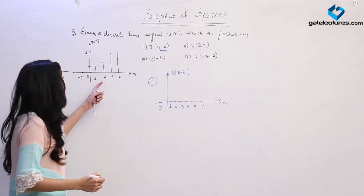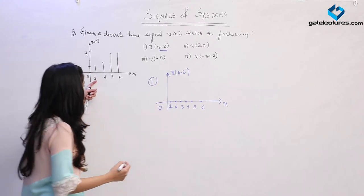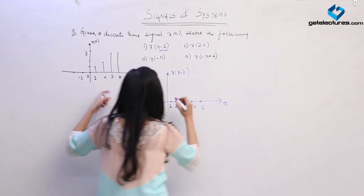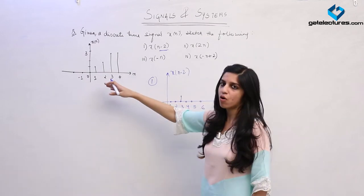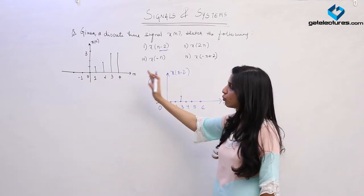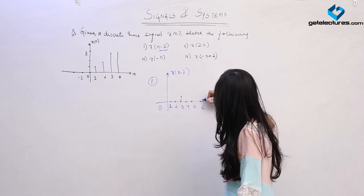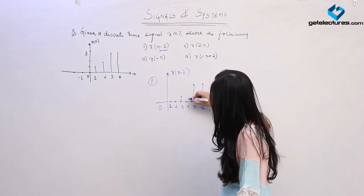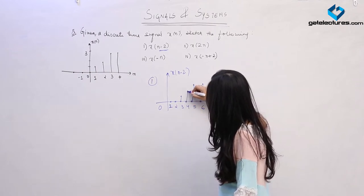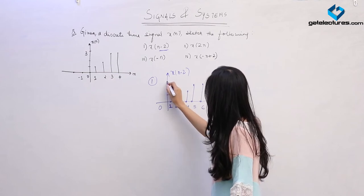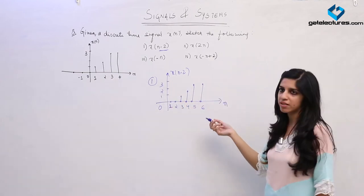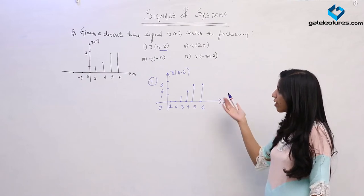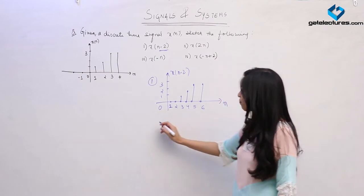This sample which is occurring at n=1 is now going to occur at n=3. Similarly, all the samples get shifted to the right by 2 units. So this is going to be the new time-shifted signal x(n-2).